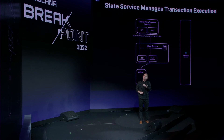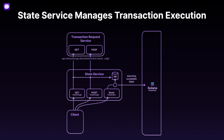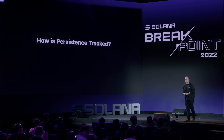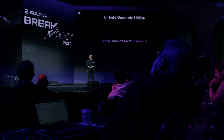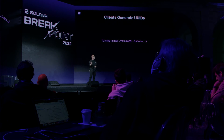The state service also manages transaction execution. The user can tap a Smart Message and then turn their phone off, delete the app, or do whatever they want — it's important that the transaction eventually succeeds so that the message status is correct. Smart messages are uncoupled from messages themselves. The Solana Pay spec and the Smart Message spec are URL encodings of information. The message sent to a user might say 'minting is now live' followed by a Solana Pay URL. We extend that to add a Smart Message ID, and clients, when they see this ID, know it is their responsibility to ship it to a state service which will then manage the process.